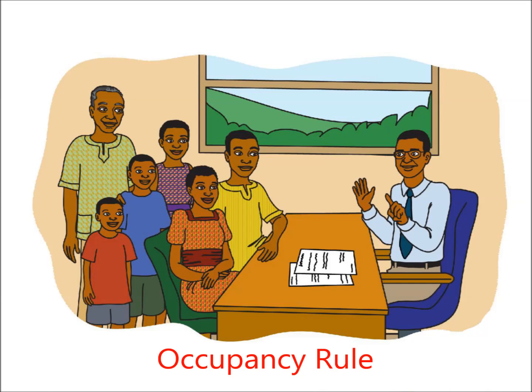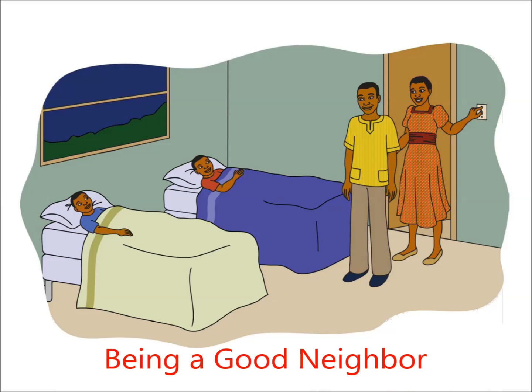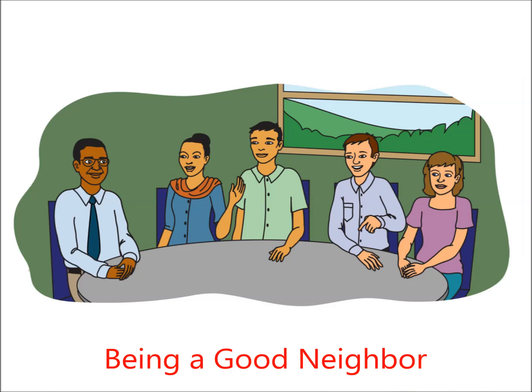Occupancy rule. There are rules on how many people are allowed to live in an apartment. It is your responsibility to follow the rules and let your landlord know how many people are living in your home. The landlord can tell you to leave your home if you do not follow this rule. Being a good neighbor. Most people living in apartments go to sleep around 10 p.m. Please keep children quiet, keep conversations at a low level, and do not play loud music between 10 p.m. and 8 a.m. If you have disagreements with your neighbors, try to resolve them together. If you cannot, ask your landlord to help.